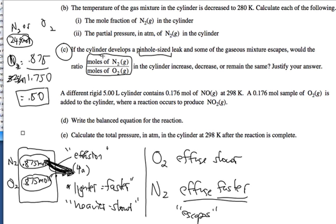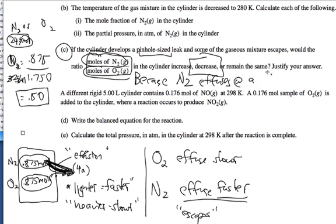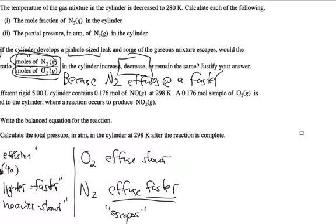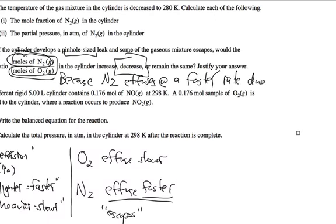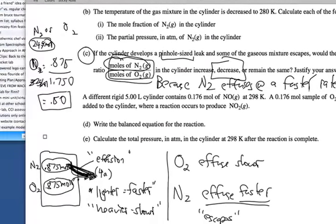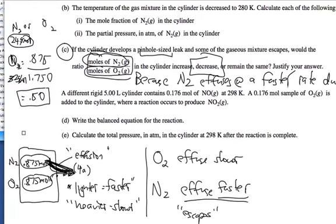So over time, more and more N2 is going to come out relative to the O2. N2 is going to come out at a much faster rate. So what will happen to this ratio? This ratio will go down. N2 is going to go down. O2 is going to go up relative to N2 over time. It will decrease because N2 effuses at a faster rate due to lower molar mass.